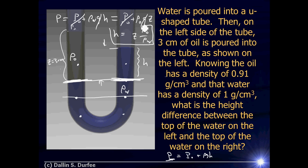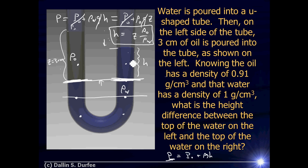There is my answer. Before plugging in numbers, let's check it. Units: density divided by density is unitless, so both sides have units of length — the units work out. Do things change in the right way? If I make Z bigger, there's more oil pushing down, so H should get bigger — and it does. If I increase the density of oil, there's more weight pushing down, which pushes the water up more on the other side — so if density of oil goes up, H goes up, and our equation confirms that.